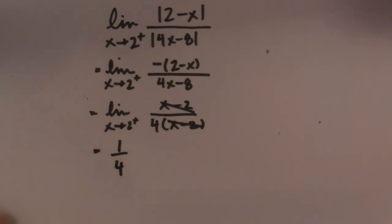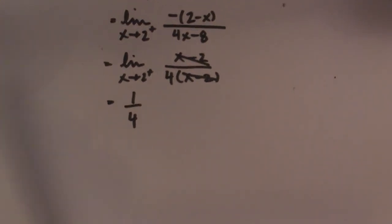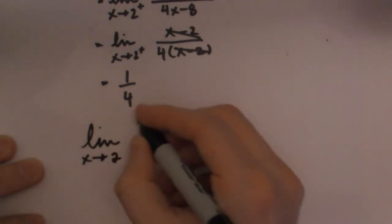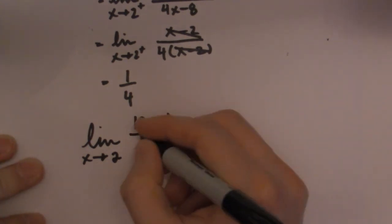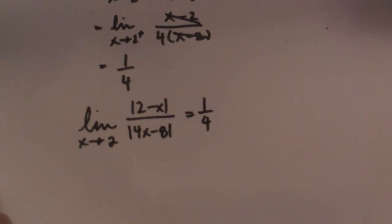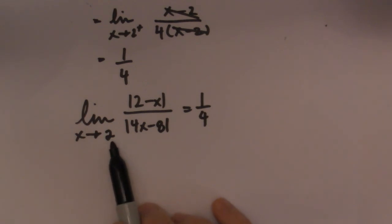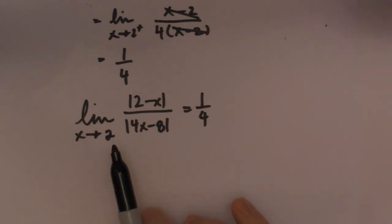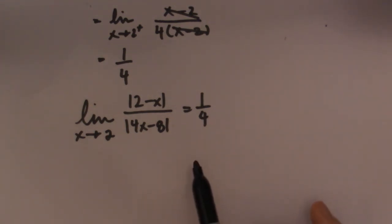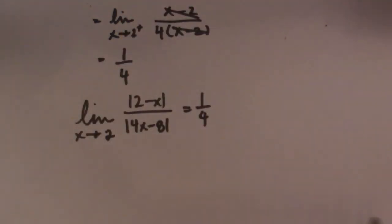Nicely done — this actually works out. Because both one-sided limits are 1 over 4, we can say that the limit as x goes to 2 of 2 minus x all over the absolute value of 4x minus 8 is equal to 1 over 4. For absolute value limits approaching a particular number, you have to check both the right-side and left-side limits. I hope this helps you in your quest to figure out absolute value limits. Thanks for watching — I promise this is my last absolute value video. See you guys in class. Bye-bye.